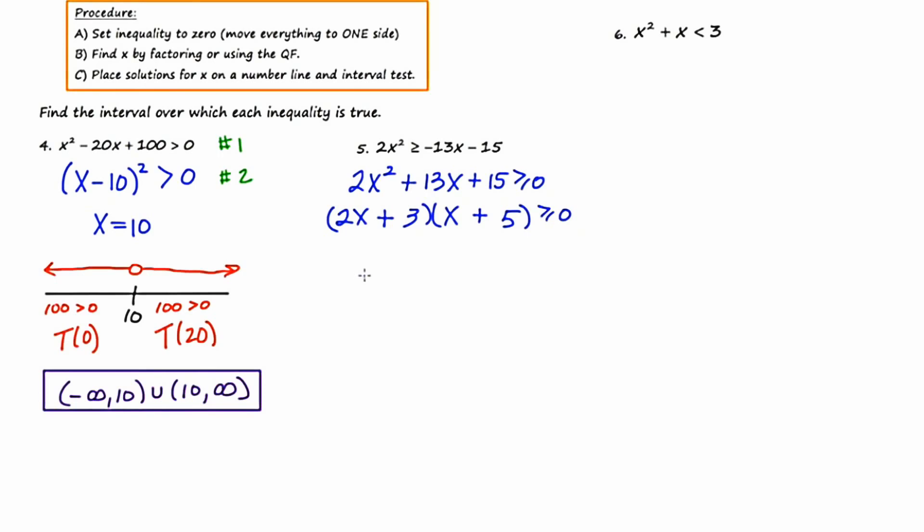Now I'm going to set each factor equal to zero to get the boundaries. The first boundary will be negative 3 halves, and the second boundary will be negative 5. I'm going to go ahead and put these values on the number line. Because there's an equal sign in the originally stated inequality, these boundaries are going to take a closed circle.